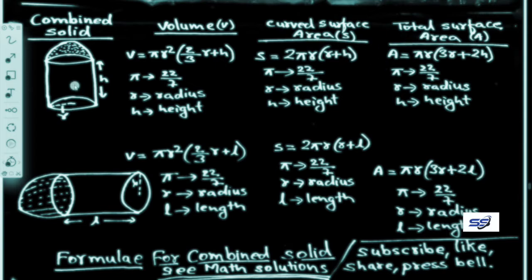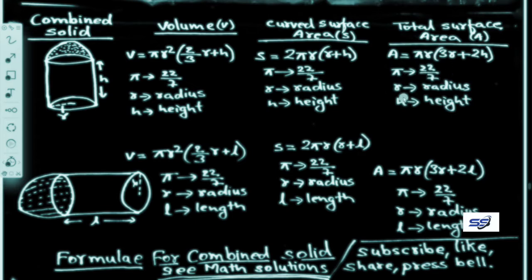The total surface area is denoted by A: A = πR(3R + 2H). In this formula, π = 22/7, R is the radius, and H is the height.